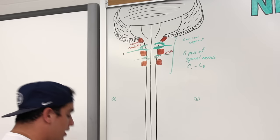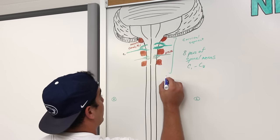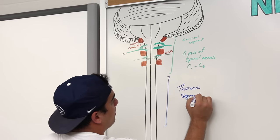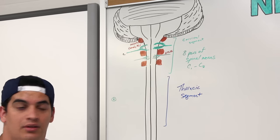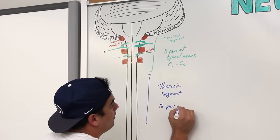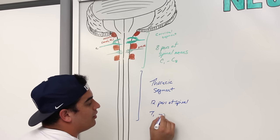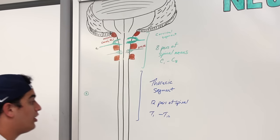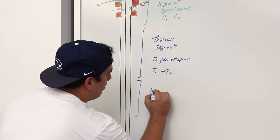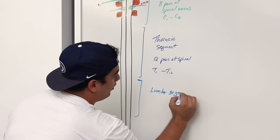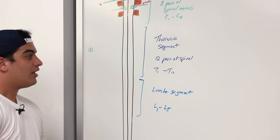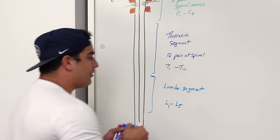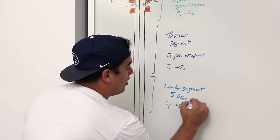The next segment is the thoracic segment, which consists of 12 pairs of spinal nerves, going from T1 all the way to T12. Then we come to the lumbar segment, which goes from L1 to L5 — that's 5 pairs of spinal nerves.